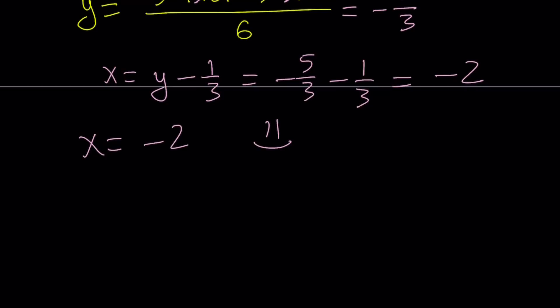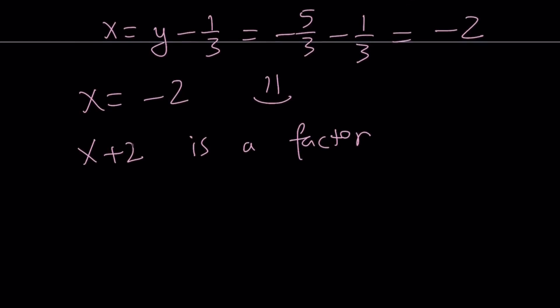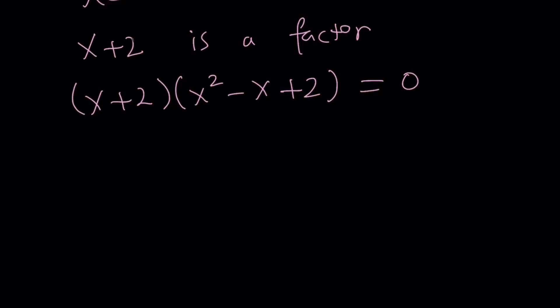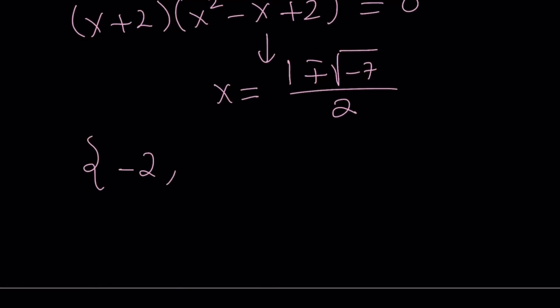But what is that supposed to mean? It just means that x plus 2 is a factor of this cubic. You can use long division or whatever method you want, and you're going to get x plus 2 multiplied by x squared minus x plus 2 equals 0. The other factor, which is quadratic, doesn't have any real solutions. If you use the quadratic formula, you get x equals negative b plus minus the square root of b squared, which is 1, minus 4 times 2 equals 8, so that's negative 7, which can be written as plus minus square root of 7i. The solutions are negative 2, 1 plus square root of 7i over 2, 1 minus square root of 7i over 2.